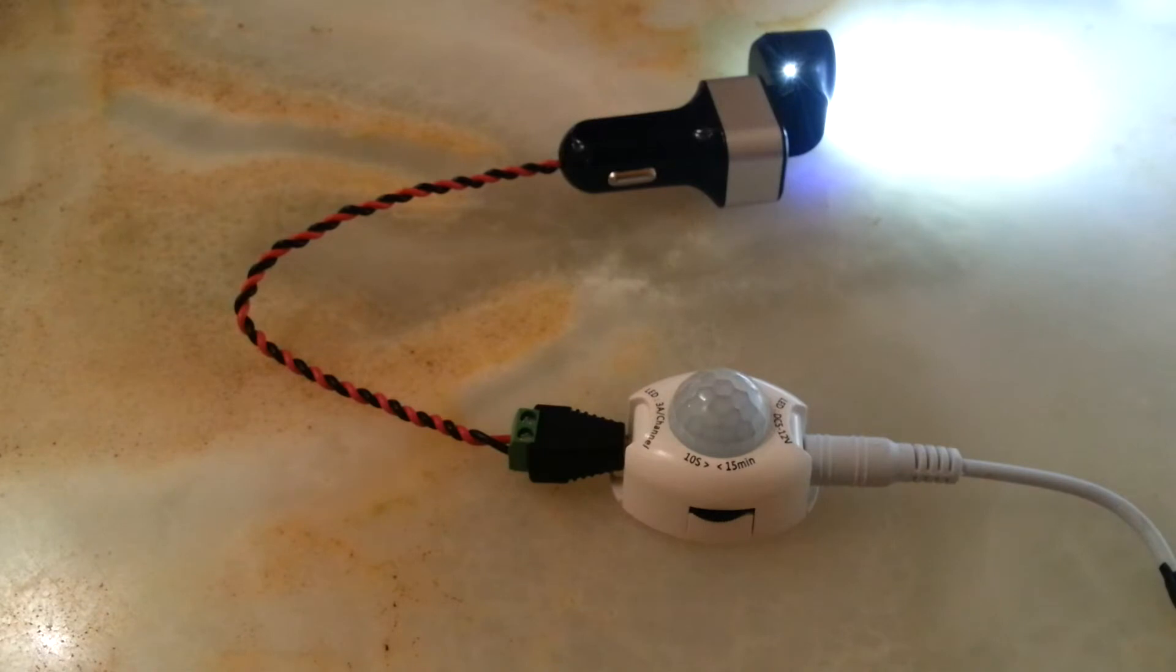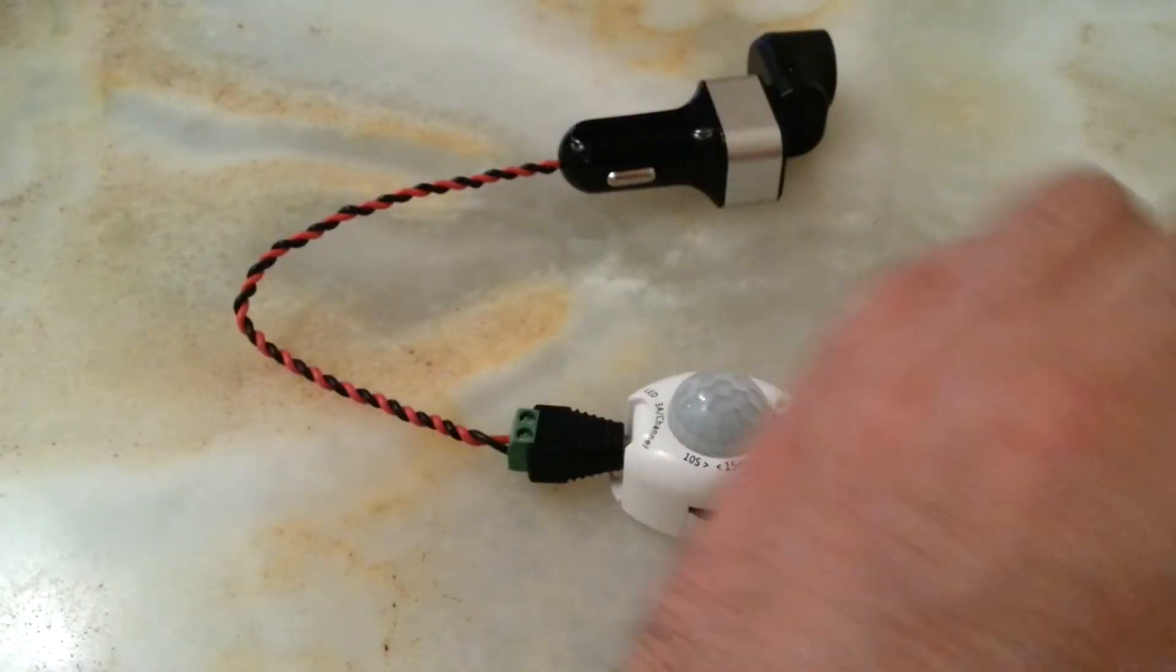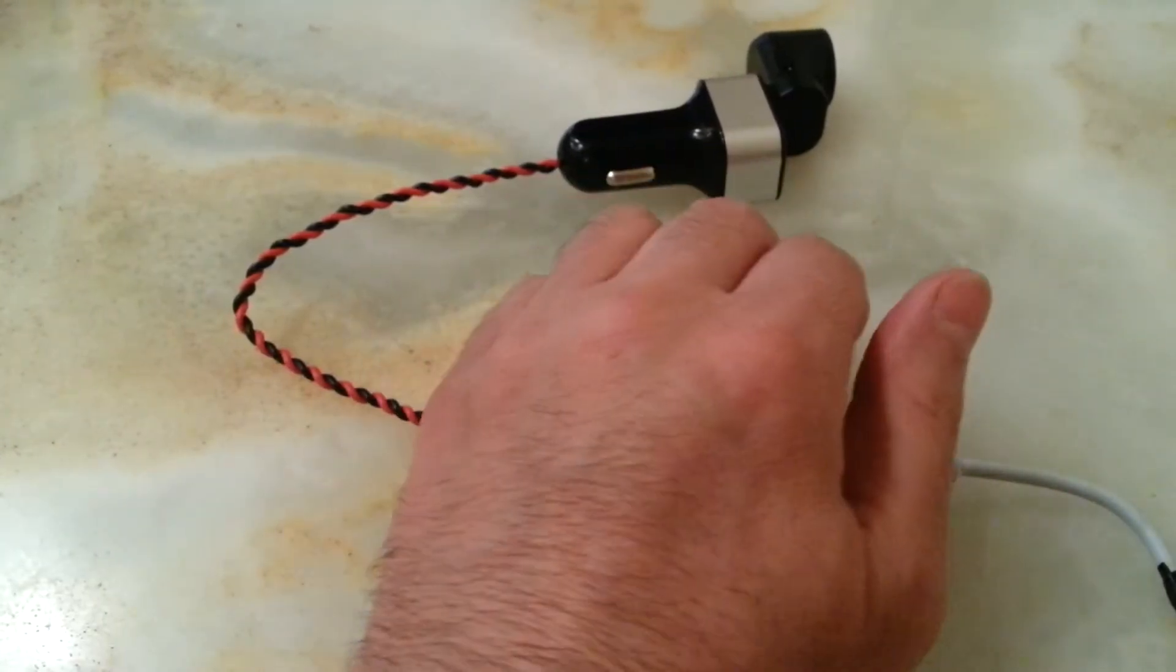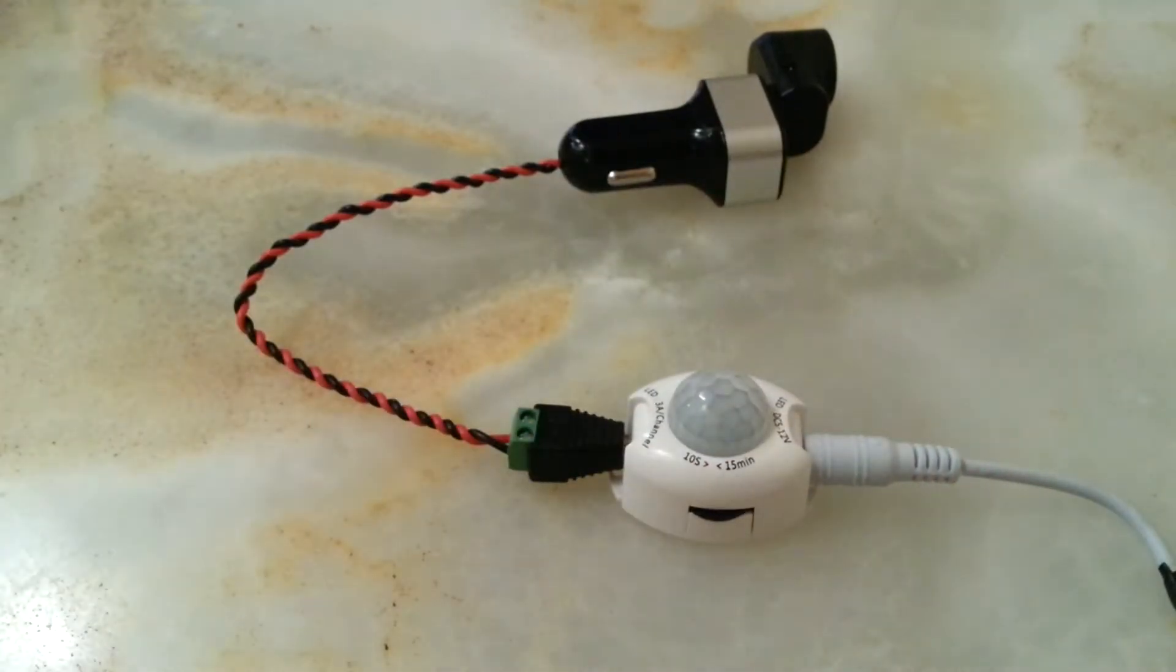The problem with this setup is as soon as it's going off in the light like this with a ceiling light, it's not going to come on anymore because of that light sensor. No matter whatever you do, this light is not going to come on.